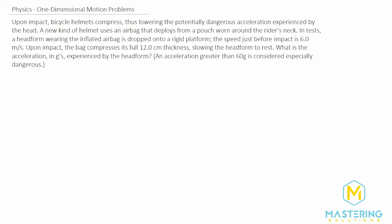Welcome to Mastering Solutions. The problem says that on impact, this bicycle helmet is using an airbag to slow down the head and neck to decrease the acceleration and help save the person's life. They say this helmet uses new technology with an airbag. In tests, the head form wearing it was dropped onto a rigid platform and the speed just before impact was 6 meters per second.